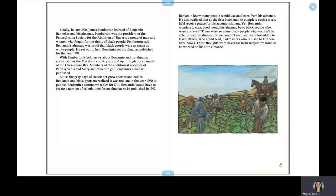Finally, in late 1790, James Pemberton learned of Benjamin Banneker and his almanac. Pemberton was the president of the Pennsylvania Society for the Abolition of Slavery, a group of men and women who fought for the rights of black people. Pemberton said Benjamin's almanac was proof that black people were as smart as white people. He set out to help Benjamin get his almanac published for the year 1791. With Pemberton's help, news about Benjamin and his almanac spread across the Maryland countryside and up through the channels of the Chesapeake Bay. Members of the abolitionist societies of Pennsylvania and Maryland rallied to get Benjamin's almanac published. But as the gray days of December grew shorter and colder, Benjamin and his supporters realized it was too late in the year 1790 to publish Benjamin's astronomy tables for 1791. Benjamin would have to create a new set of calculations for an almanac to be published in 1792.